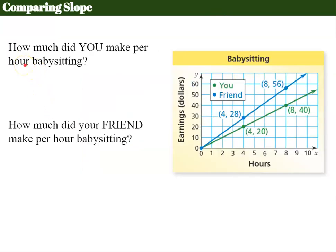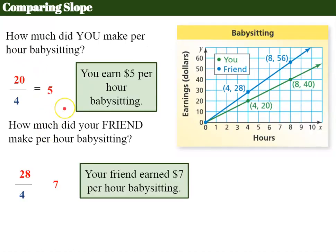So now you're being asked, how much did you make per hour babysitting and how much did your friend make per hour babysitting? Which we already went over. So you have already found yours, 20 divided by 4, you make $5 per hour babysitting. And because this line starts at the origin too, 28 over 4 is 7, telling you that the friend makes $7 per hour babysitting.